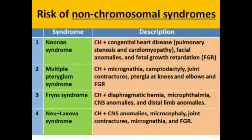Fryns syndrome includes cystic hygroma, diaphragmatic hernia, micro-ophthalmia, central nervous system anomalies, and distal limb abnormalities. Neu-Laxova syndrome includes cystic hygroma with central nervous system anomalies, microcephaly, joint contractures, and features of fetal growth retardation.